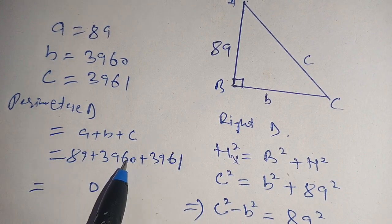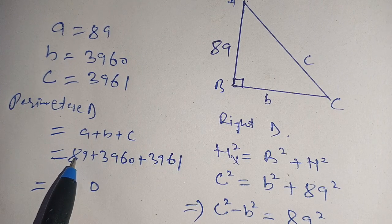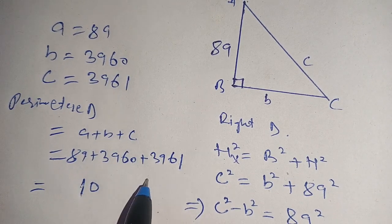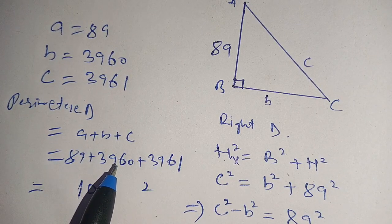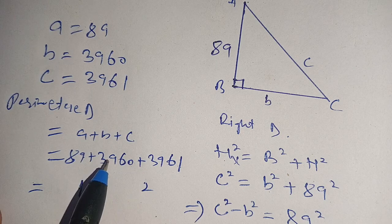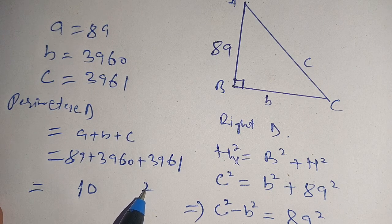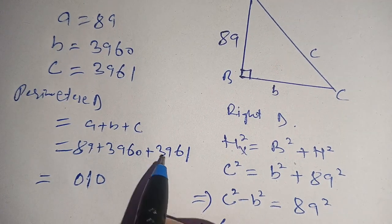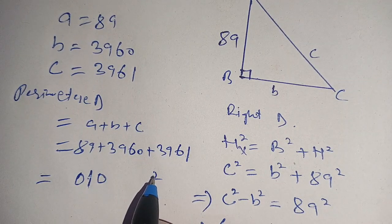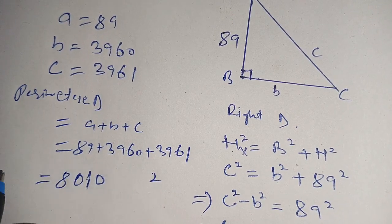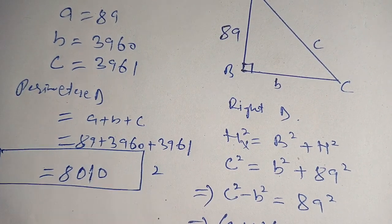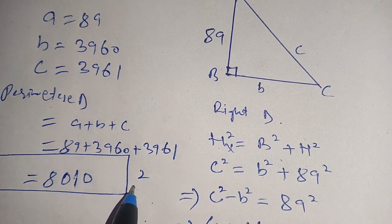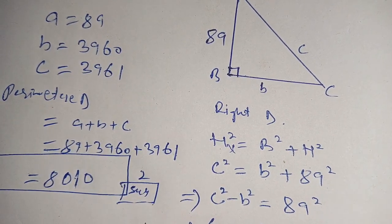Adding 89 + 3960 + 3961, the perimeter of this triangle becomes 8010 units, which is the required value. Please make sure to subscribe to our channel for more informative videos. See you in the next video — till then, bye!